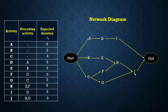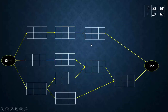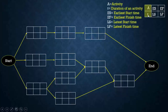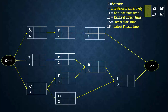Now we are going to see how to find the duration of the project using the network diagram. This is an exaggerated view of the network diagram where each individual activity is represented by a small tabular column showing the activity name, duration, earliest start time, earliest finish time, latest start time, and latest finish time. We will now fill in all activity names and durations, then carry out the forward pass to find the earliest start and earliest finish time of each activity.